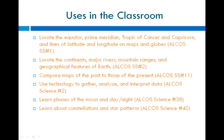Since I am a third grade teacher, I went to the Alabama course of study for science and social studies. Social studies objective number one says to locate the equator, prime meridian, Tropic of Cancer and Capricorn, and lines of latitude and longitude on maps and globes. Social studies objective number two says to locate the continents, major rivers, mountain ranges, and geographical features of Earth. Social studies objective number 11 says to compare maps of the past to those of the present, which we do in Map and Globe Skills.